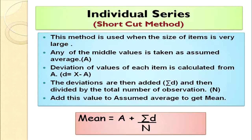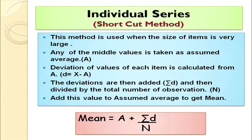Now we can discuss the assumed mean method, also known as the shortcut method. We should use the shortcut method when the size of the items is very large, or when the examiner specifically instructs you to use it. Step 1: take any middle value as the assumed average and denote it as A.